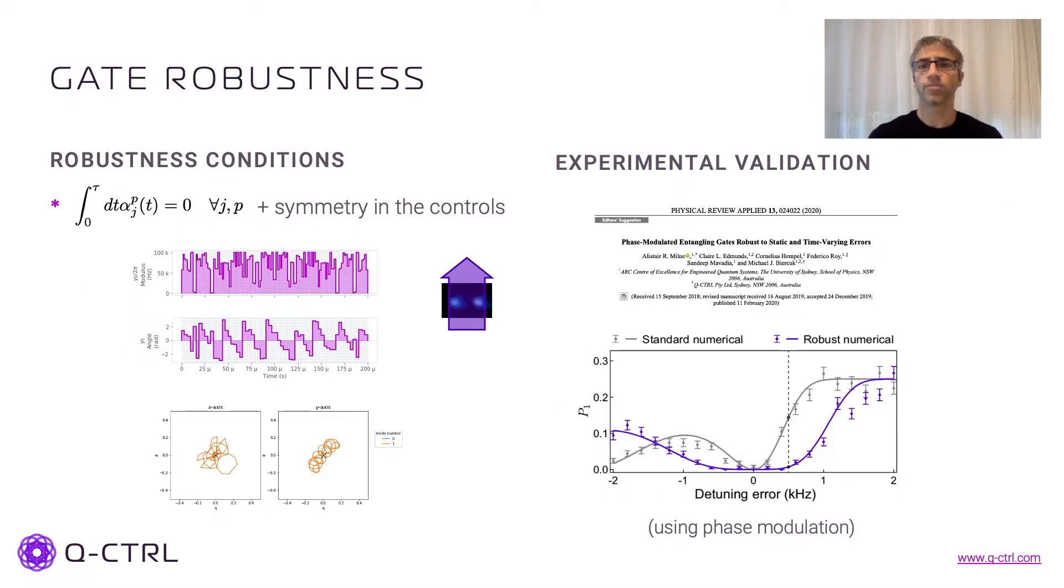So the other aspect that I wanted to mention about those gates is robustness. So the way to enforce robustness is actually to change a little bit the cost function of our optimization. So instead of just enforcing the trajectories to close, what we want is that the integral of those trajectories to be zero, which means that the center of mass of those trajectories are always around the center here at zero.